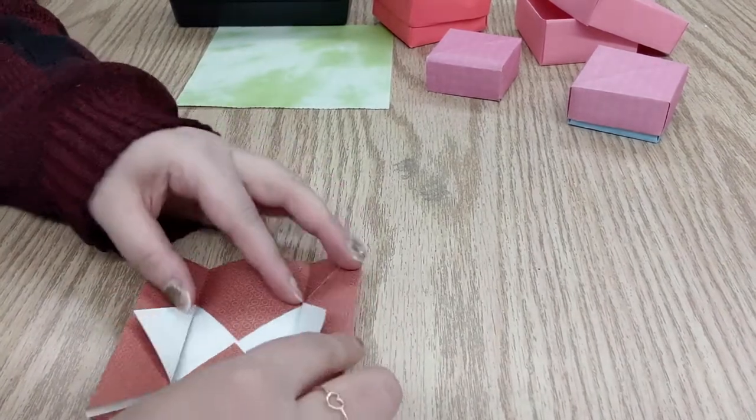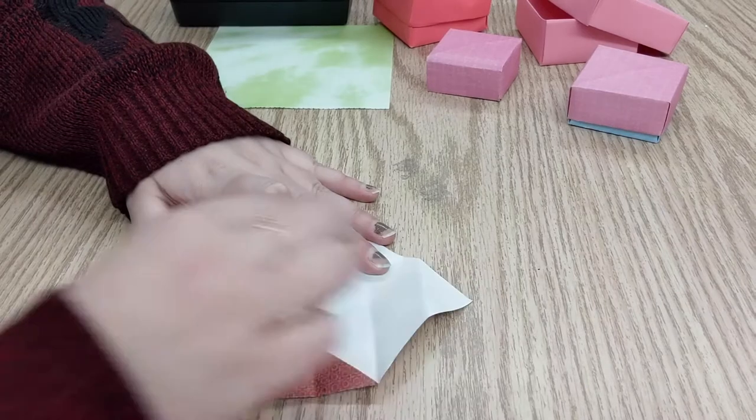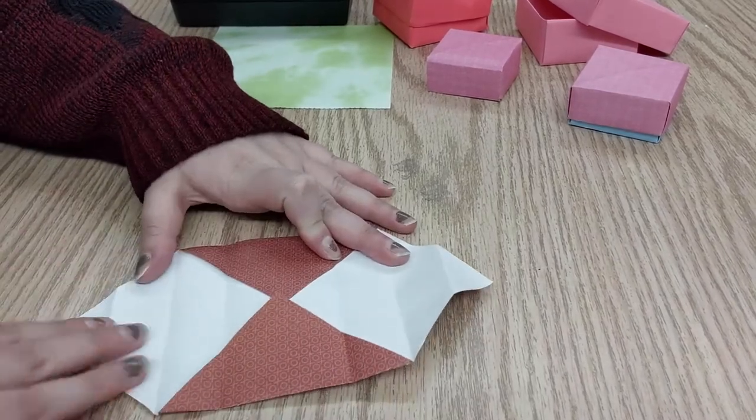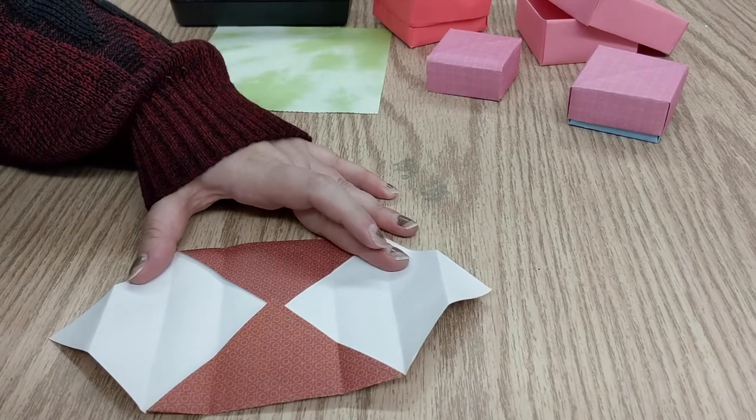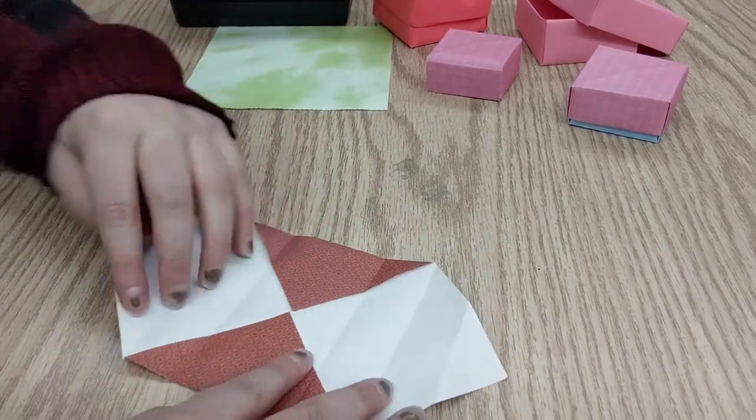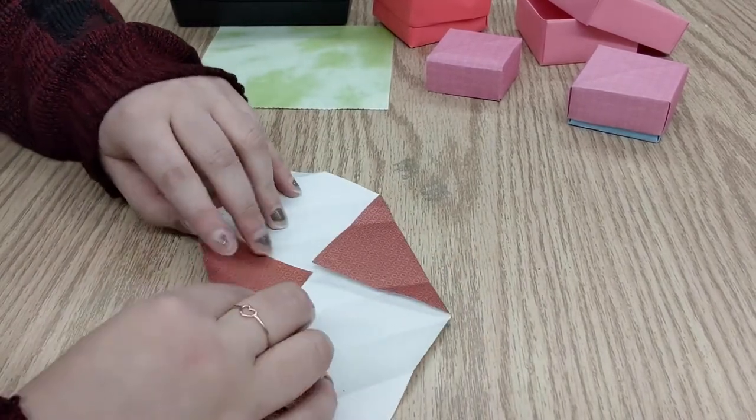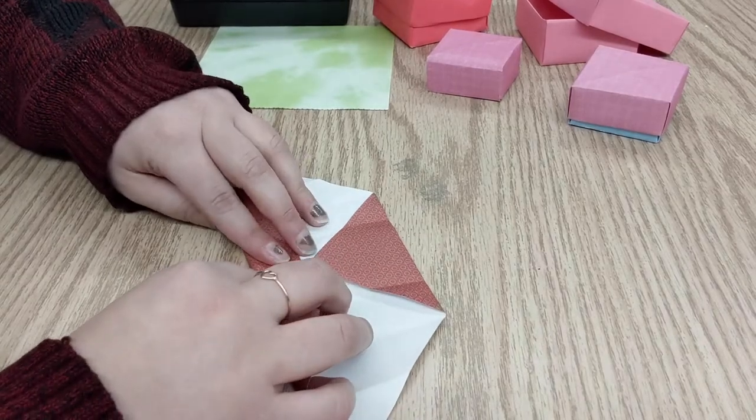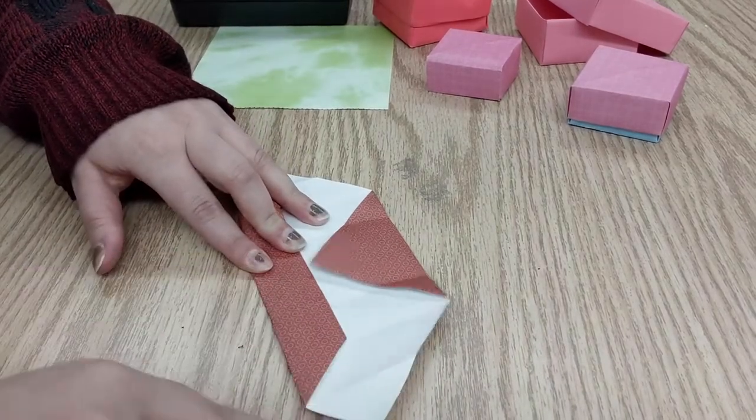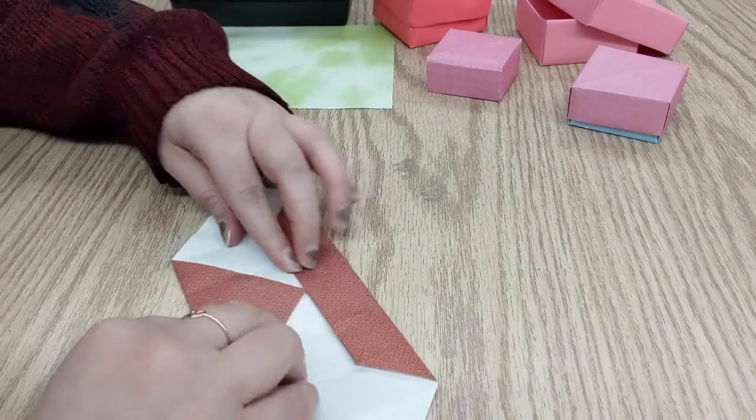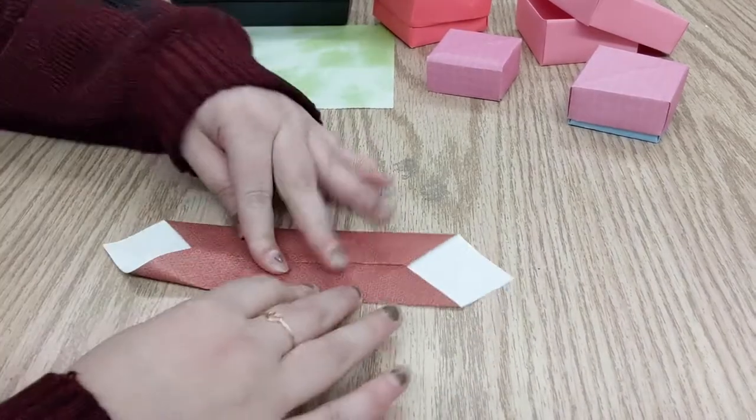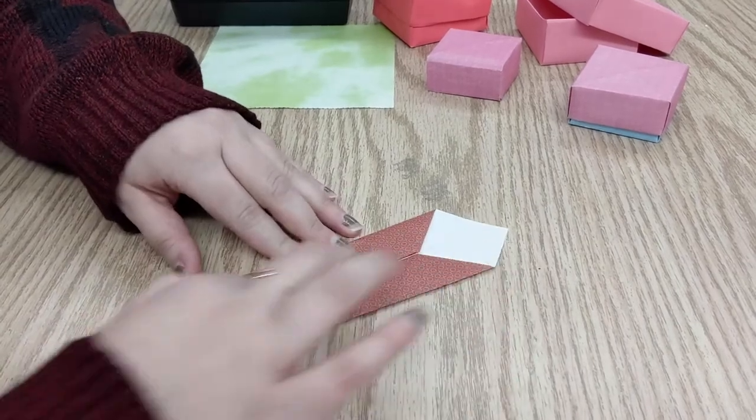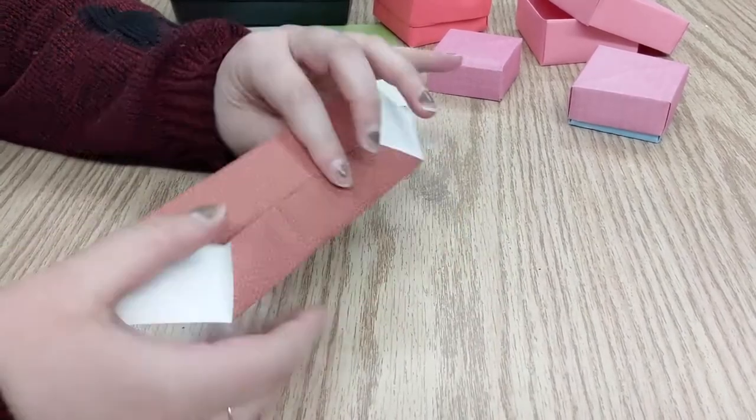So now you're gonna unfold it, and you take this side and this side and unfold them all the way. So your next step is you're gonna fold these edges towards the center. For this first piece, you want them to line up perfectly, so there's no space in between.